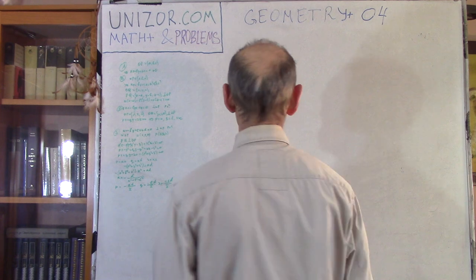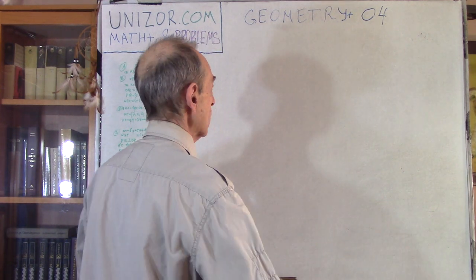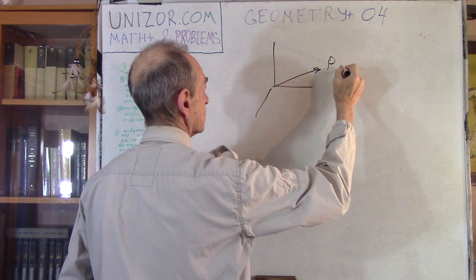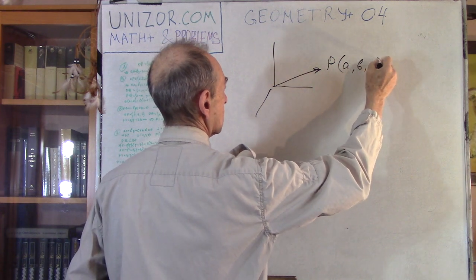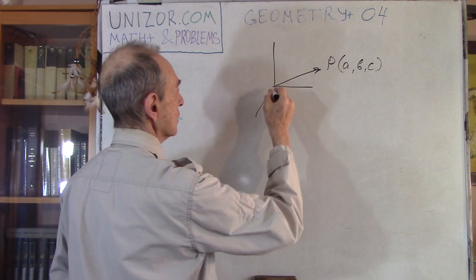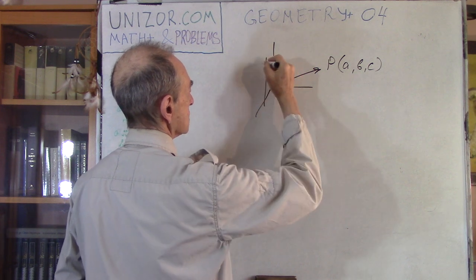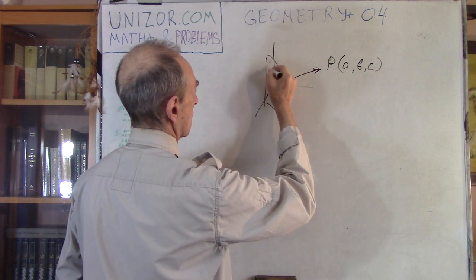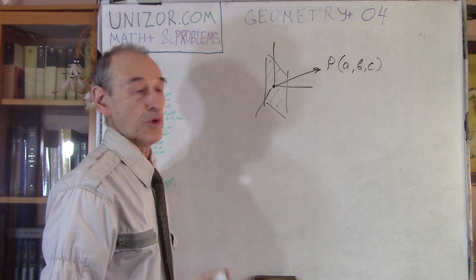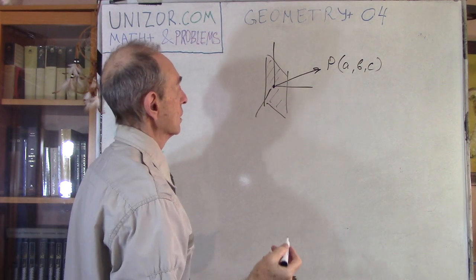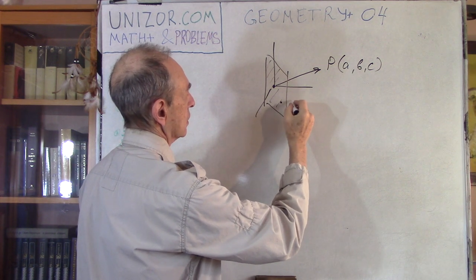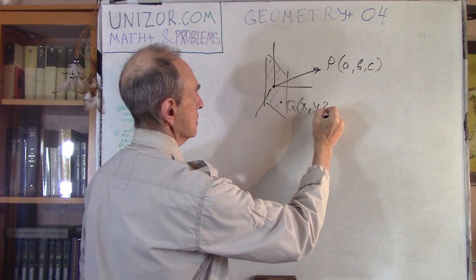Let's start from the simplest problem. Say you have a certain vector in three-dimensional space — this is point P with coordinates A, B, and C. What I'm interested in is an equation of the plane which goes through the origin of coordinates — some kind of plane like this — which is perpendicular to this vector.